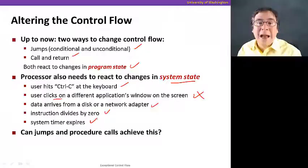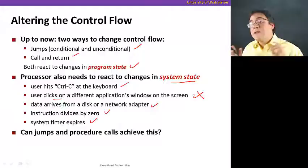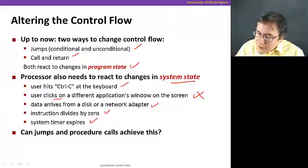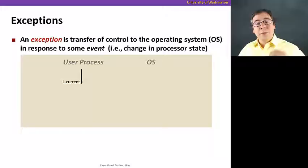Also, if the system timer expires — there's a device called the real-time timer in your system that from time to time interrupts the processor to tell it that a certain amount of wall clock time has passed. This is going to be useful to implement context switches that we'll see later in this module. Can jumps and procedure calls implement this? Well, they really can't — they're not sufficient. We need systems for exceptional control flow for things that are not part of the program state.